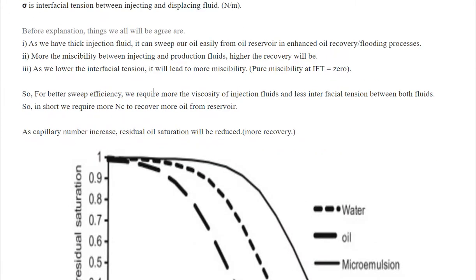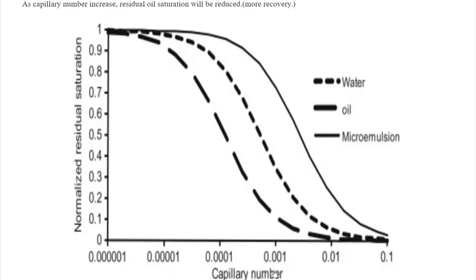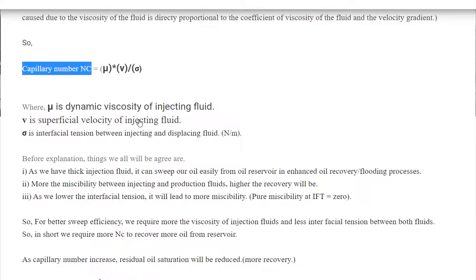For better EOR performance, we require higher viscosity of injection fluid and lower interfacial tension, both of which increase the capillary number. This graph shows capillary number versus residual oil saturation. As the capillary number increases, the residual saturation decreases, meaning we get more oil recovery with a higher capillary number.